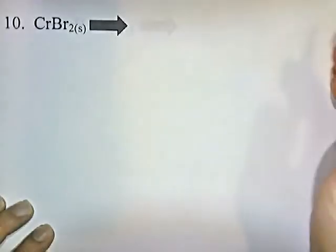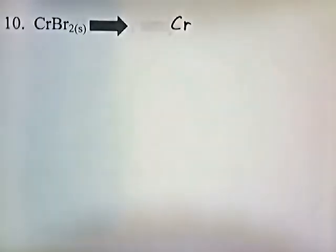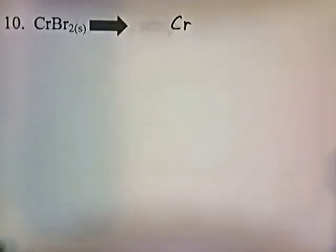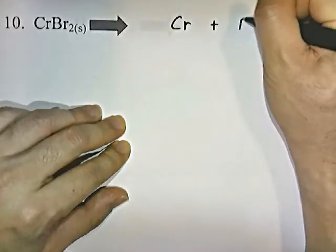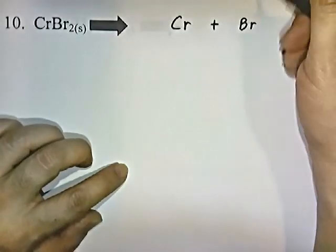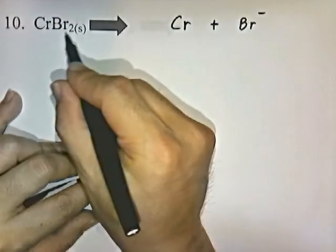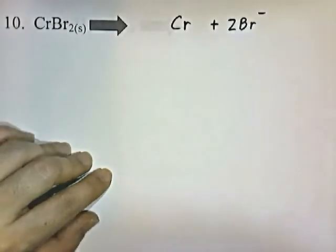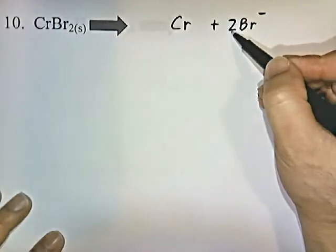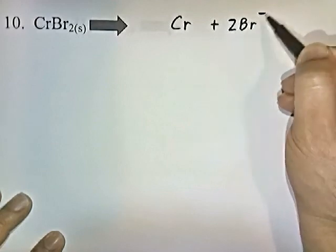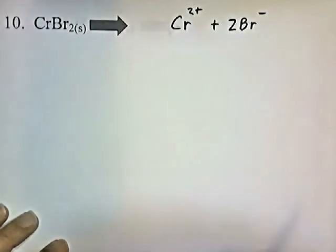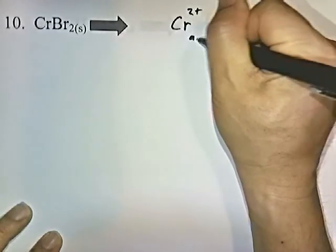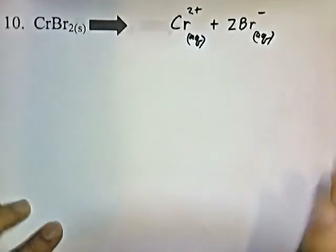Chromium bromide: Cr is chromium, also a transition element with variable oxidation states. Bromine is in group 7A — it's a halogen, so it has a negative 1 charge. There are 2 bromines, so we swing the 2 in front of the Br. I have two negative 1 charges, so the total negative charge is negative 2. That means chromium has to have a plus 2 charge to balance. Positive 2 and negative 2 equals 0.